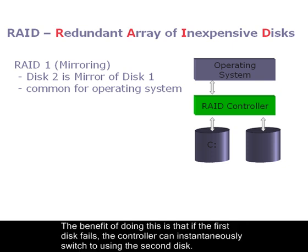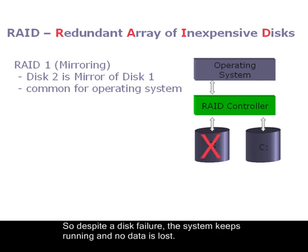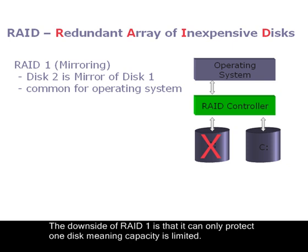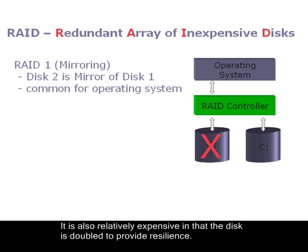The benefit of doing this is that if the disk fails, the controller can instantaneously switch to using the second disk. So despite a disk failure, the system keeps running and no data is lost. The downside of RAID 1 is that it can only protect one disk, meaning capacity is limited. It is also relatively expensive, in that the disk is doubled to provide resilience.